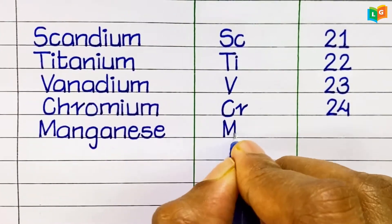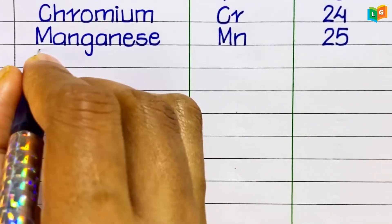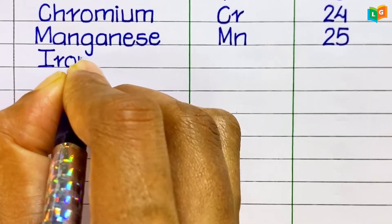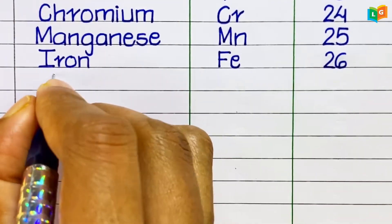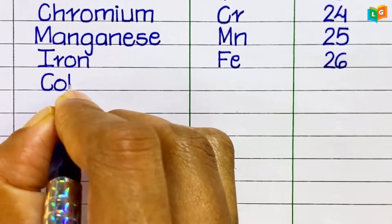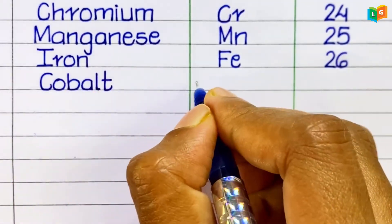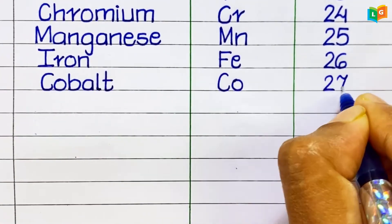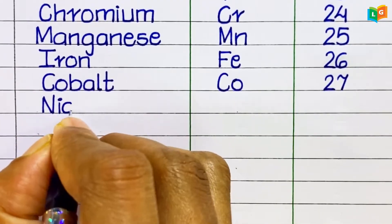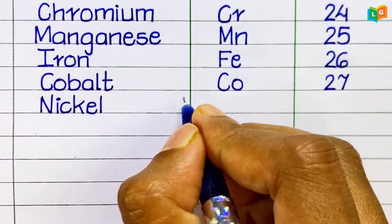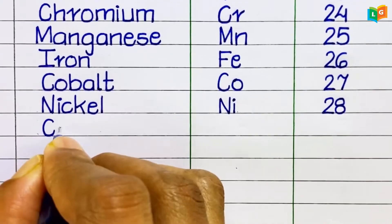Manganese, symbol Mn, atomic number 25. Iron, symbol Fe, atomic number 26. Cobalt, symbol Co, atomic number 27. Nickel, symbol Ni, atomic number 28.